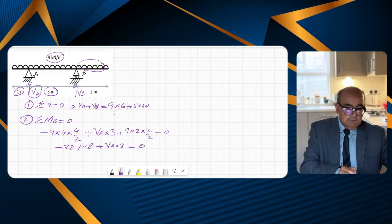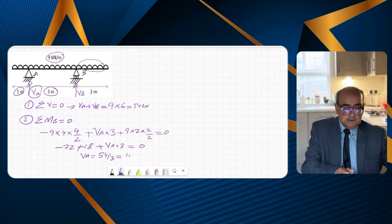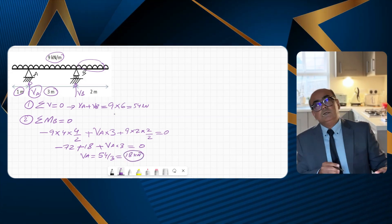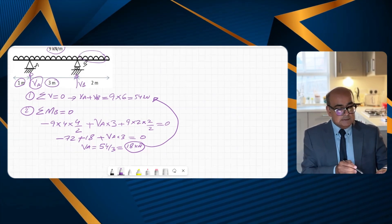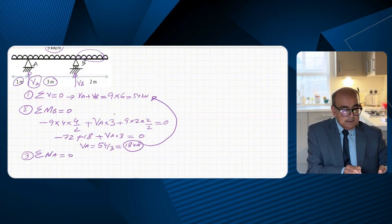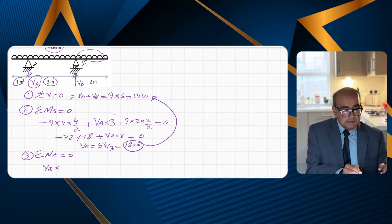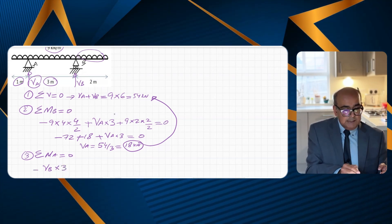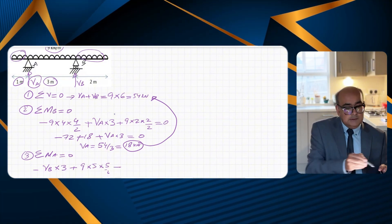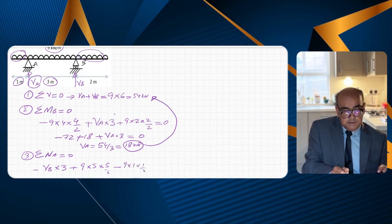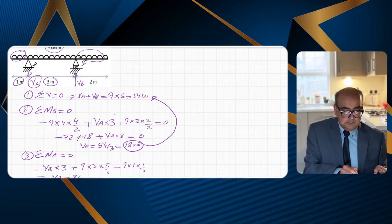Simplifying, VA equals 54 divided by 3, giving VA equal to 18 kN. For VB, using summation of moments at A equals zero: VB times 3 (anticlockwise, negative) plus 9 times 5 times 5 over 2 (load between A and right overhang) minus 9 times 1 times 1 over 2 (left overhang load) equals zero. Solving gives VB equal to 36 kN.